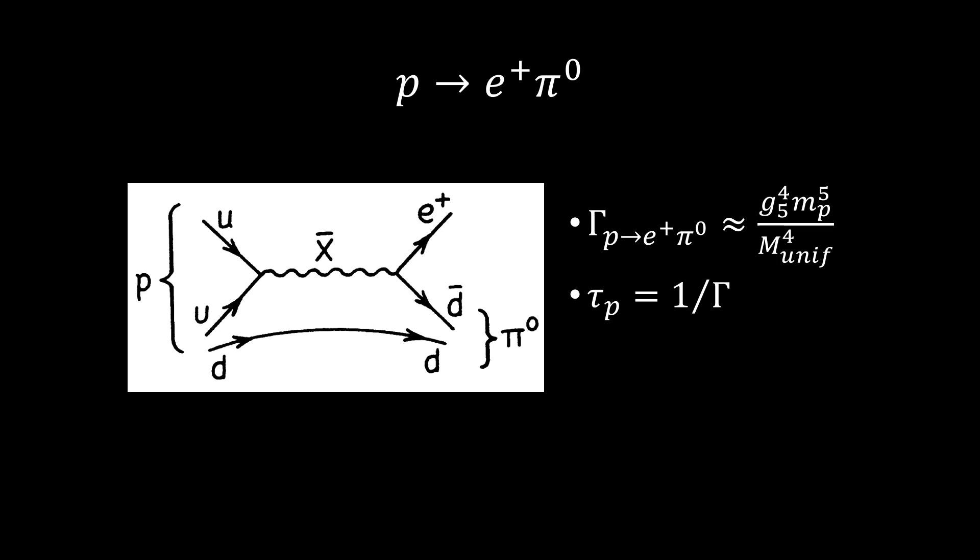Numerically, since τ_p varies as m_unif^4, it is very sensitive to the value of m_unif. For m_unif = 5 × 10^15 GeV, we get τ_p about 10^31 years. The universe has a lifetime of about 10^10 years, although protons would not be stable, they would appear very stable on the scale of the lifetime of the universe. This is consistent with our perception of them as stable.